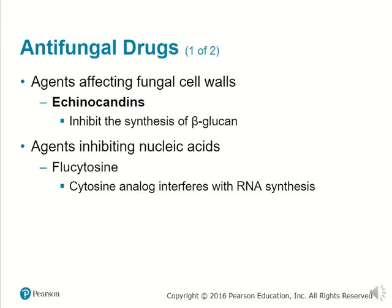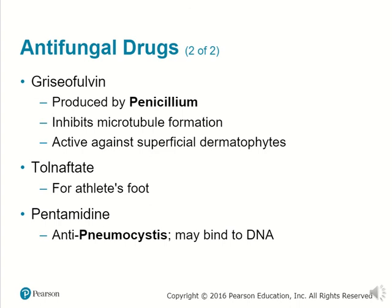There are agents that affect the fungal cell walls, such as echinocandins, which inhibit the synthesis of beta-glucan. There are also agents inhibiting nucleic acids, such as flucytosine, which is a cytosine analog that interrupts the incorporation of cytosine nucleic acid bases in RNA synthesis. There's also griseofulvin, produced by Penicillium, which inhibits microtubule formation and is active against superficial dermatophytes. There's tolnaftate, excellent against athlete's foot, and pentamidine, which has anti-Pneumocystis activity but may bind to DNA.